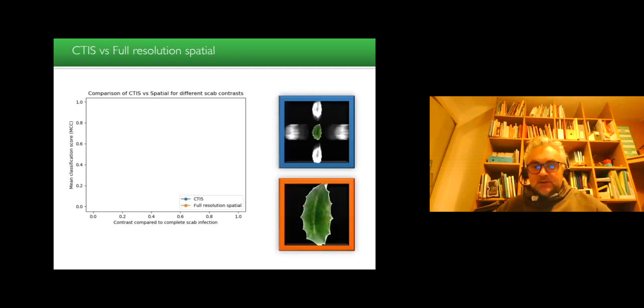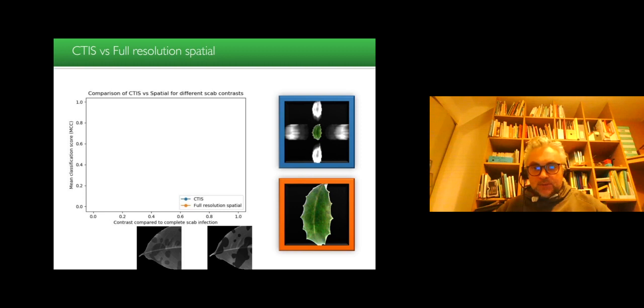And these are the results when we compare the CETIS with the full spatial resolution. So for the full spatial resolution, we have performance that dropped when we have a too low contrast, when the level of infection is too low, and then it raise up to something perfect after a contrast of 0.5 here on the contrast compared to complete scab infection. And this is what the CETIS gives. So similar curves, a little bit below, but for the higher contrast, but for the lower contrast, there is apparently a gain. So basically, if we would have an RGB and a CETIS camera, it would make sense to fuse both information to have a better performance.